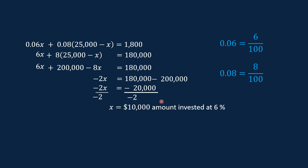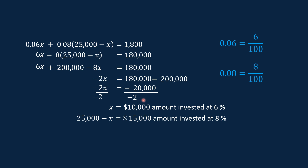So X equals $10,000, which is the amount invested at 6%. Then $25,000 minus $10,000 equals $15,000. So $15,000 is the amount invested at 8%.